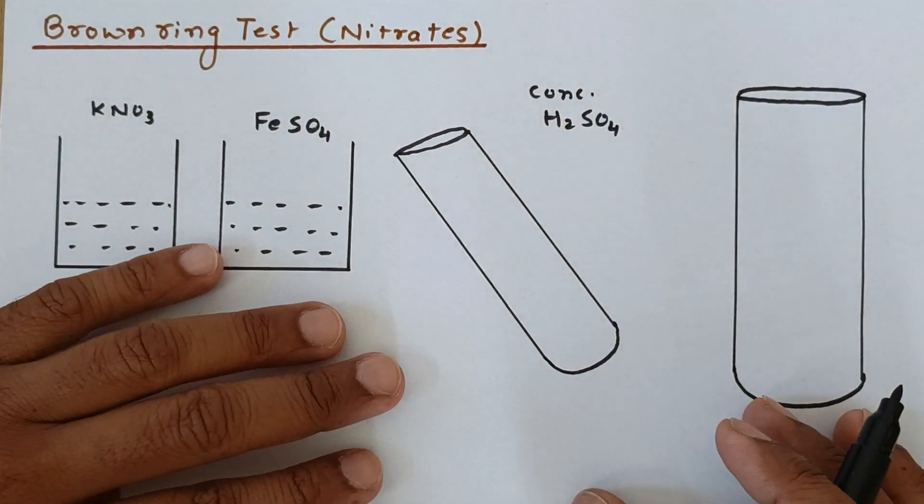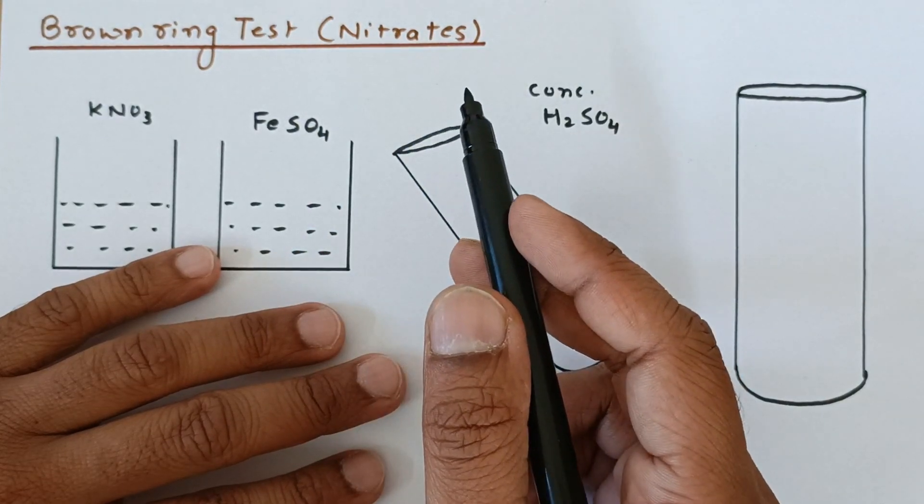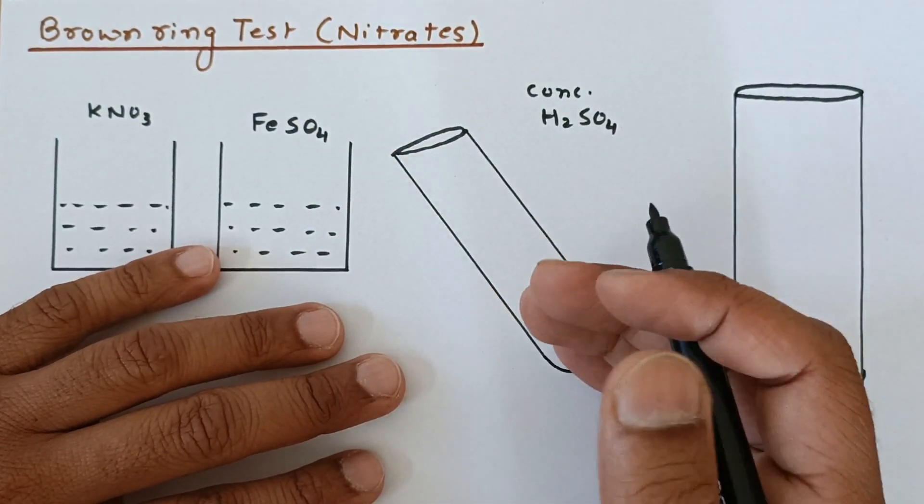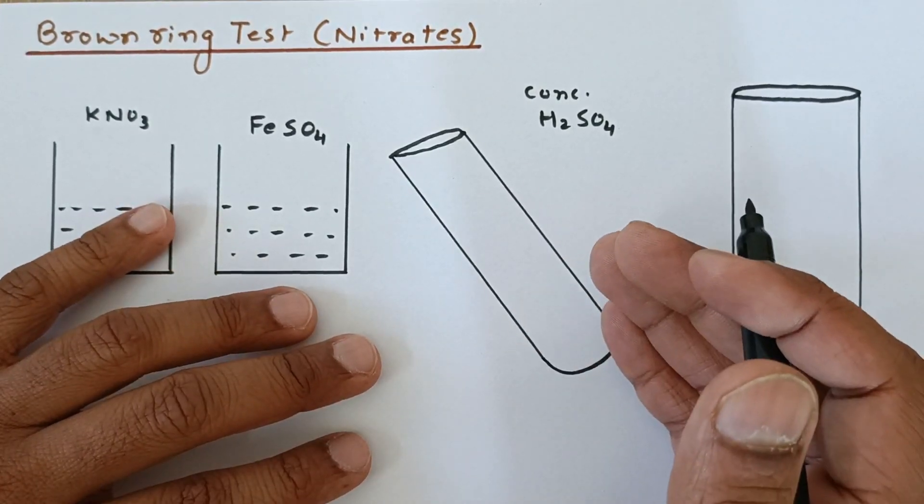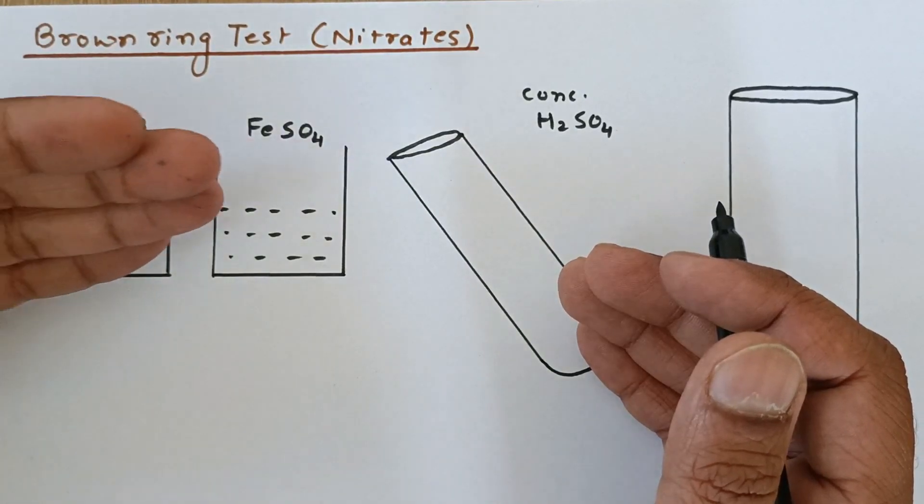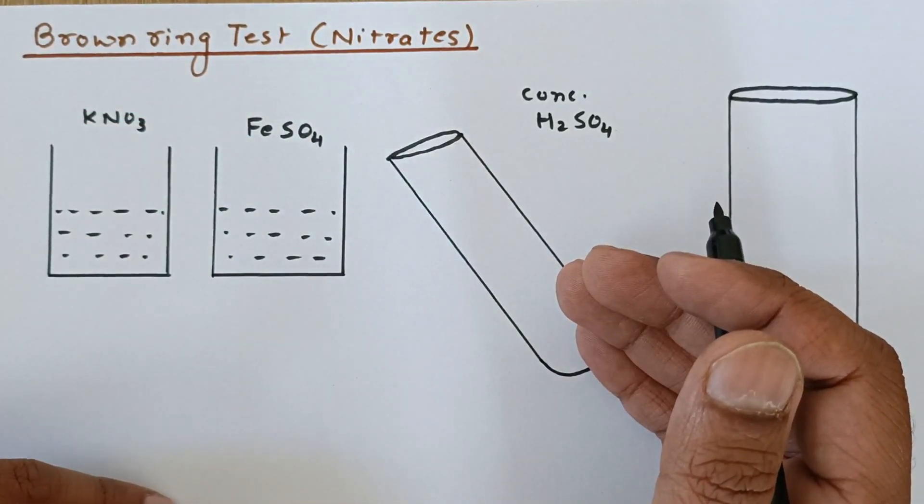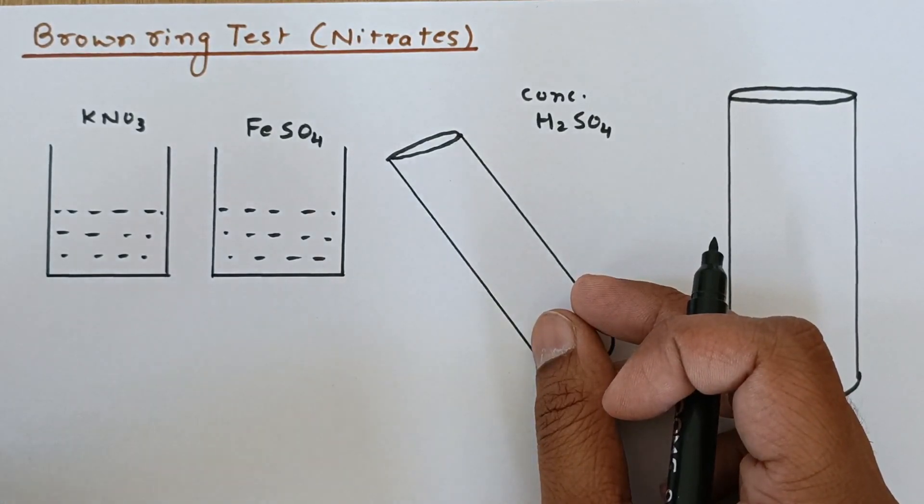Hello everyone, in this video we are going to understand the brown ring test for the nitrates in theory. So I have already done this experiment and already uploaded it into my channel. If you haven't watched that video, please see the video and then understand this particular explanation. The link to that video is given in the description, so please check that out.